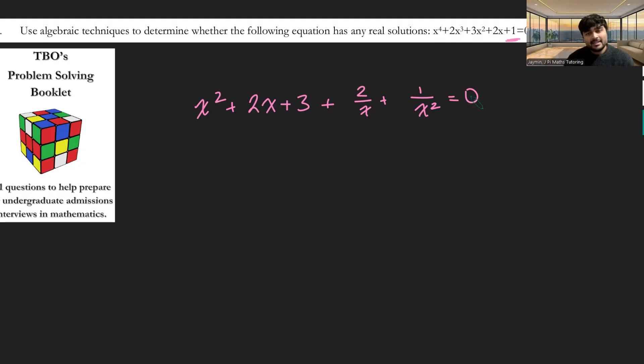Now the trick to this is finding a relationship between x plus 1 over x and this equation here. Let me call this alpha for the time being. So alpha is going to be x plus 1 over x. Then what is alpha to the power of 2? Well, it's going to be x squared plus 2 lots of x times 1 over x, which is just 1, plus 1 over x squared.